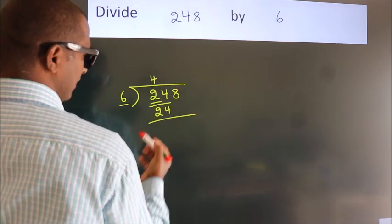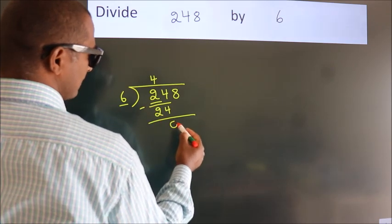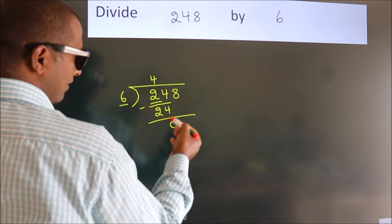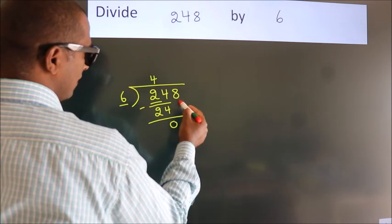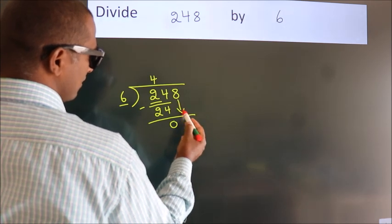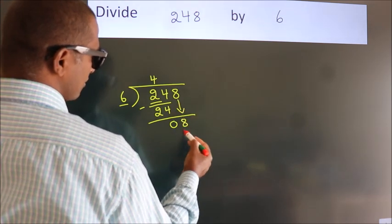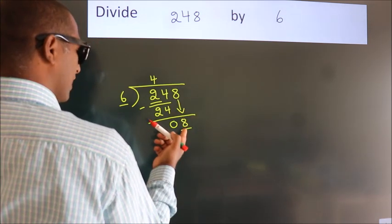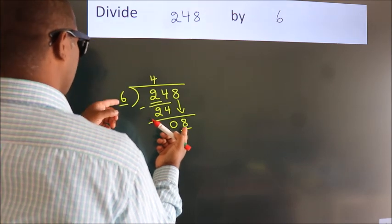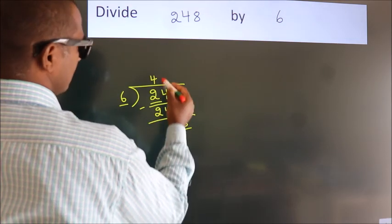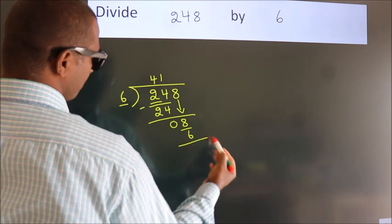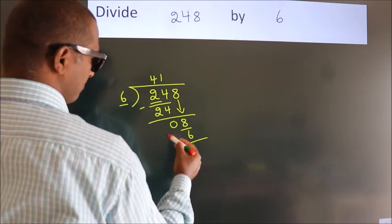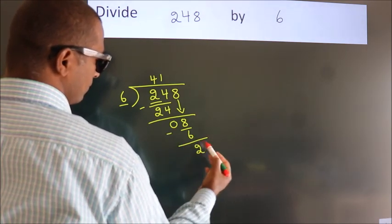Now we should subtract. We get zero. After this, bring down the next number, 8. A number close to 8 in the 6 table is 6 times 1, which is 6. Now we subtract and get 2.